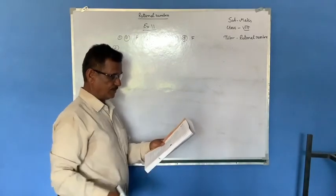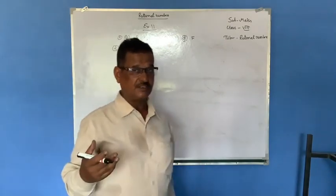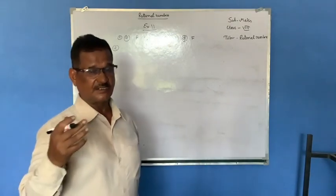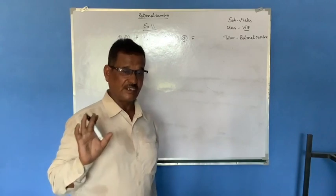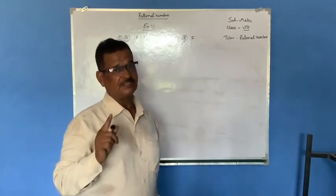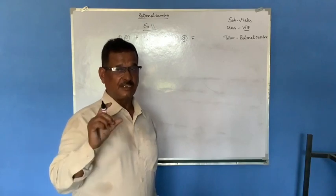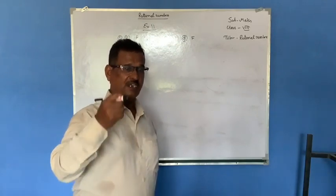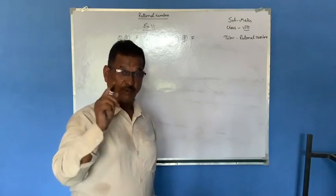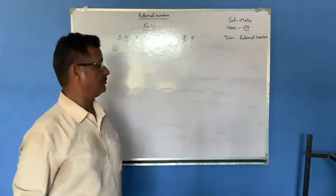Second question: identify whether the following rational numbers are positive or negative. If numerator and denominator have the same sign — either both negative or both positive — then that is a positive rational number. If either the numerator or denominator is negative, meaning one out of both is negative, then that is a negative rational number.